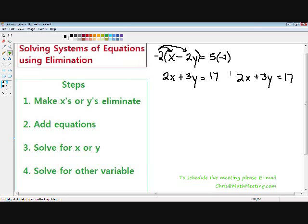And now notice when I distribute, negative 2 times x is just negative 2x. And negative 2 times negative 2y is positive 4y. And negative 2 times 5 is negative 10.